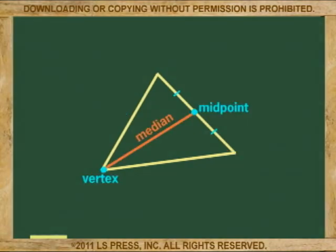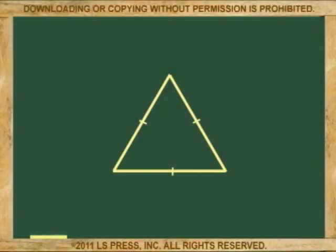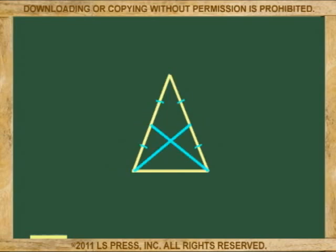If the triangle is equilateral — all three sides are equal — then all three medians are equal. If it is an isosceles triangle, two sides are equal, then two of the medians are equal.